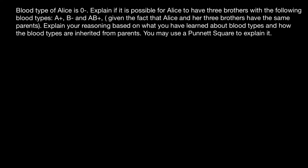Hello and welcome to Nikolai's Genetics Lessons. In this video I'm going to talk about blood groups. This question I got from one of my subscribers: the blood type of Alice is O-negative. Explain if it is possible for Alice to have three brothers with the following blood types: A positive, B negative, and AB positive, given that Alice and her three brothers have the same parents. Explain your reasoning based on what you have learned about blood types and how they are inherited from parents. You may use a Punnett Square to explain it.